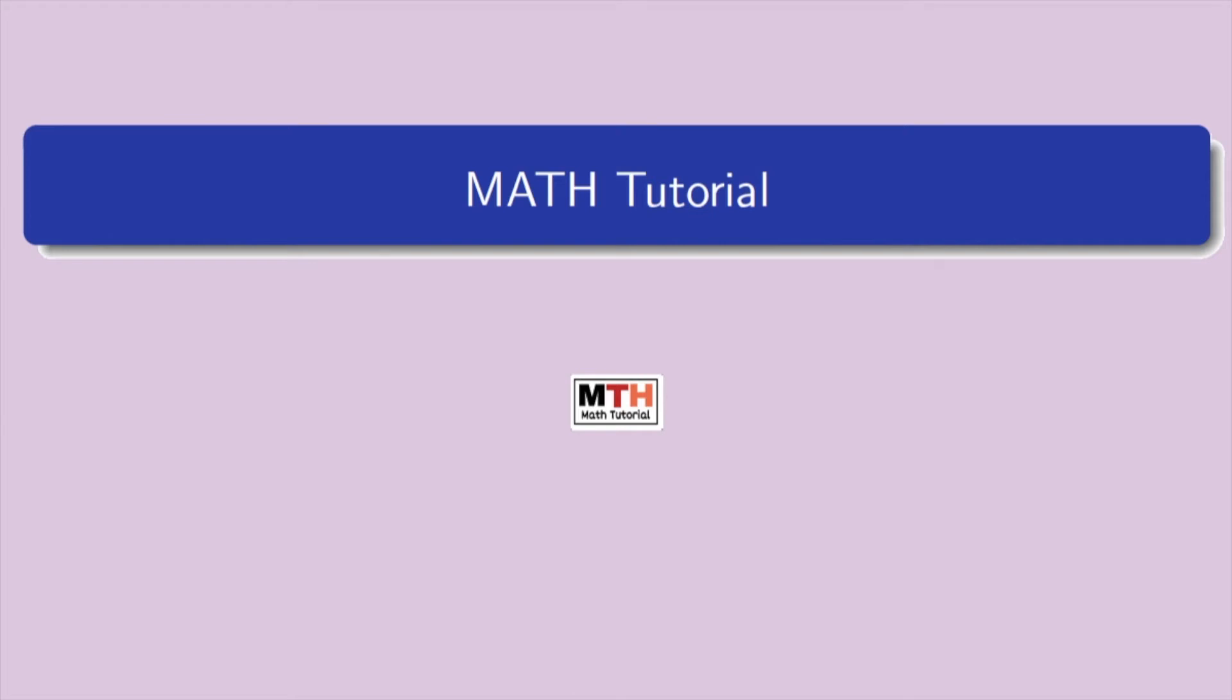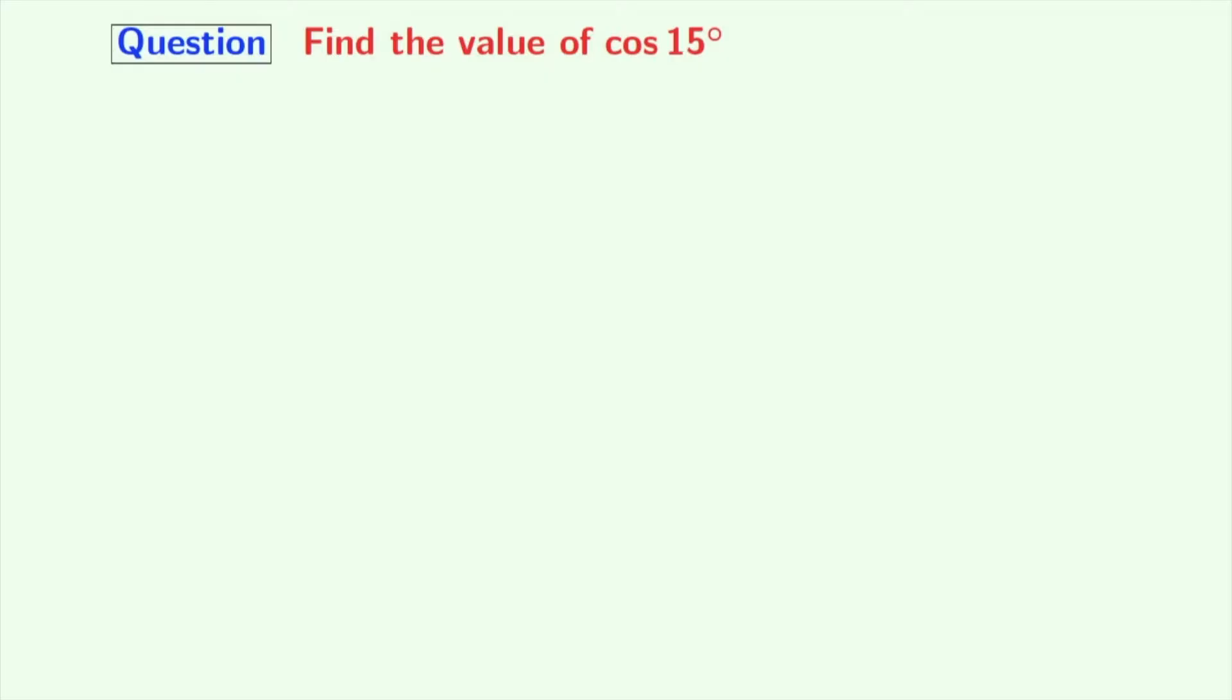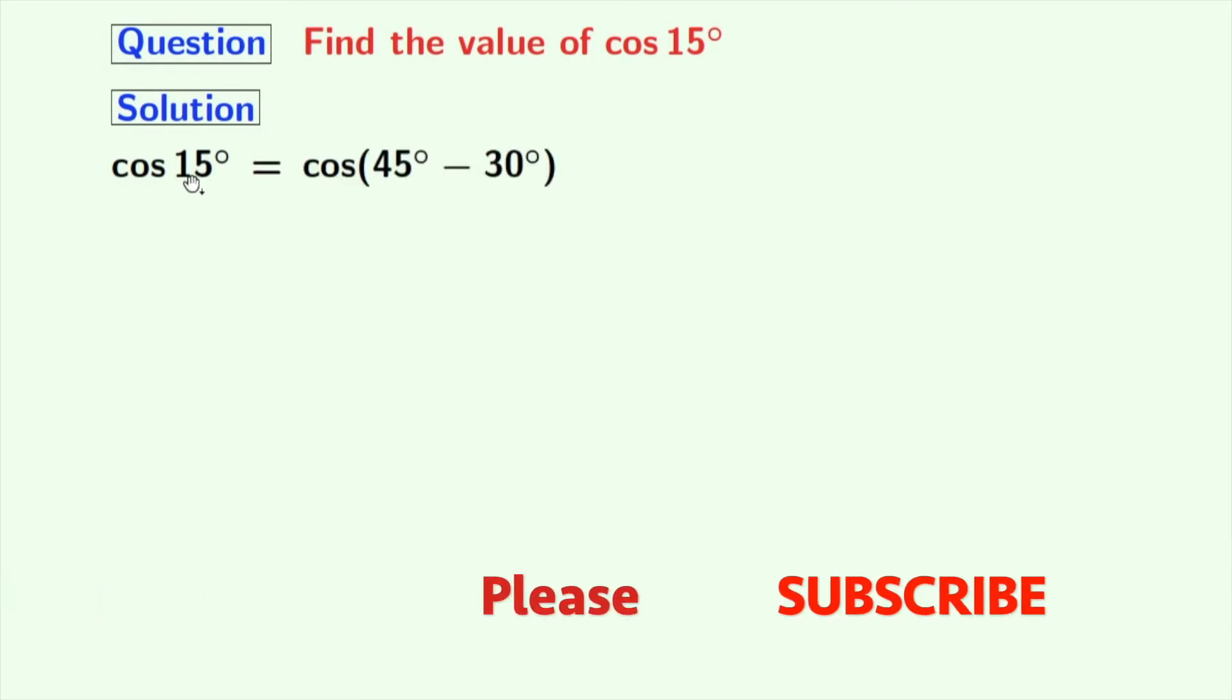Hi friends, welcome to my tutorial. Today we will find the value of cos 15°. Let's start. 15 can be written as 45 minus 30, so we can rewrite cos 15° as cos(45° - 30°).